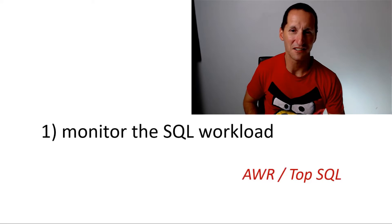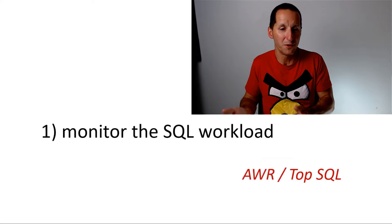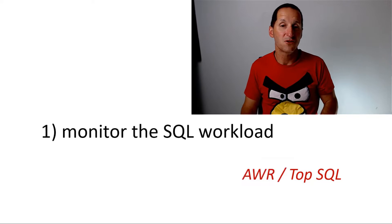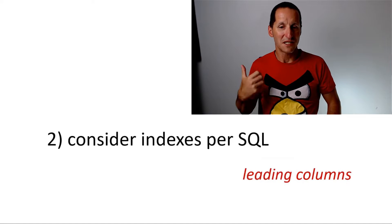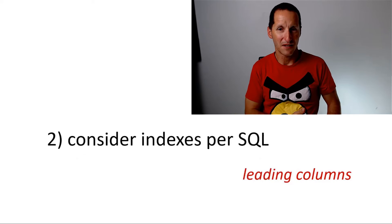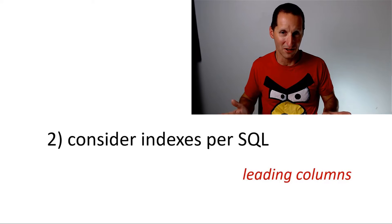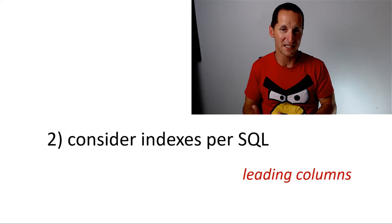You have a slow SQL you think can be improved with an index. Rather than just slamming an index in, let's talk about best practice. The first thing you need to do is identify all the queries that are struggling - there might be one, there might be ten. The best way to do that is to monitor the SQL load over time, using an AWR report, the top SQL report, or queries against v$sqlstats, to pick up a set of SQL statements that potentially need attention. Step two is to look at each of those individual SQLs, in particular the leading columns on the predicates.